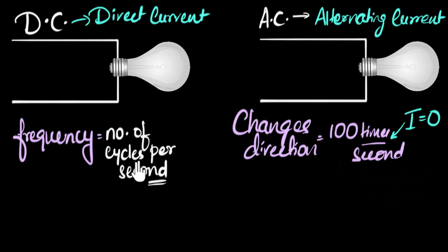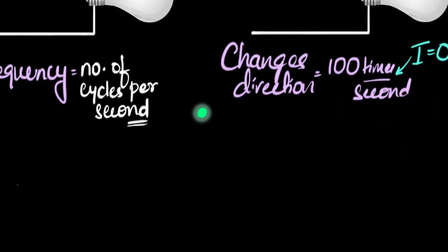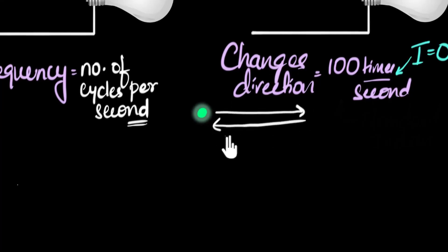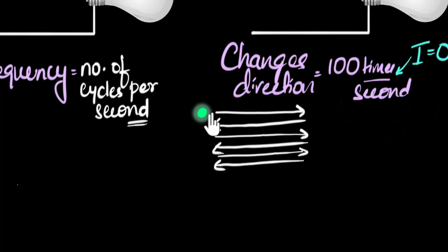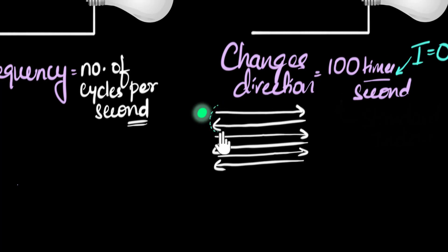So what is the meaning of the word cycle? Whenever things are going back and forth, their motion is repeating itself — that particular repeating motion is what we call a cycle. Let's bring back our electron. The electron goes forward, then changes its direction, goes back, changes its direction again, goes forward and so on. Once it has gone forward and then comes back and changes its direction, the motion repeats itself. Therefore, this is one cycle — the portion which starts repeating itself.